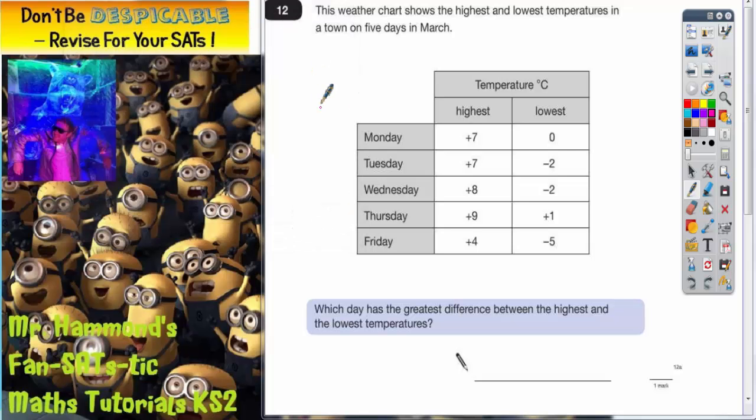Question 12. This question is all about negative numbers and specifically the difference between a positive and a negative number. This weather chart shows the highest and lowest temperatures in a town on five days in March.